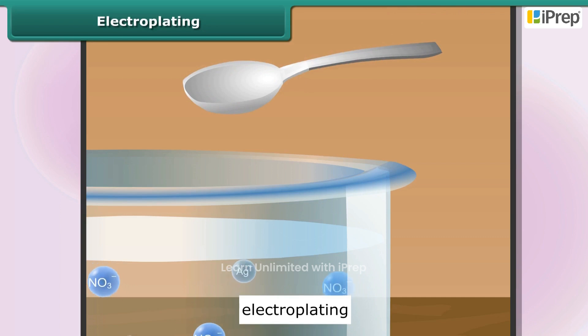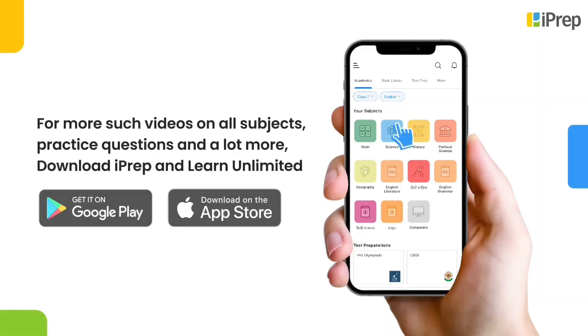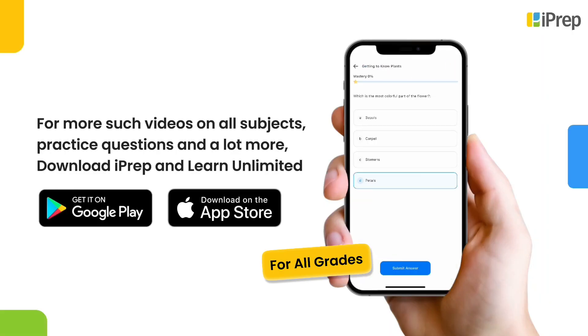The silver deposits in the form of a thin metallic layer. The thickness of the layer depends on the conditions under which the electrolysis is conducted. This process is known as electroplating.